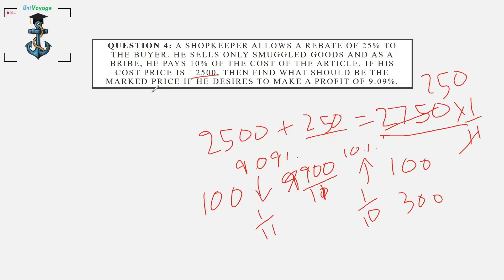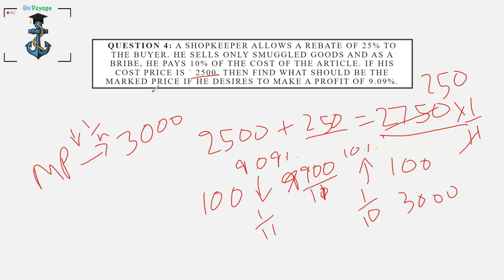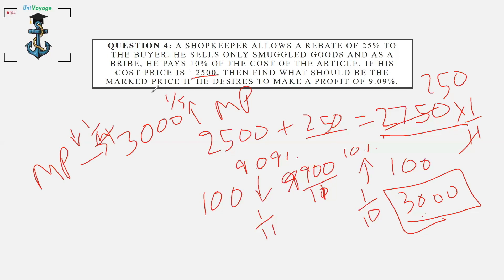After calculating the desired selling price as ₹3000, we account for the 25% rebate. A rebate of 25% means the price was reduced by 1/4. So ₹3000 is the price after rebate. To get back to the marked price, we need to increase by 1/3 — since reducing by 1/4 requires increasing by 1/3 to reverse it. So 1/3 of 3000 = ₹1000. Therefore, the final marked price should be ₹4000.